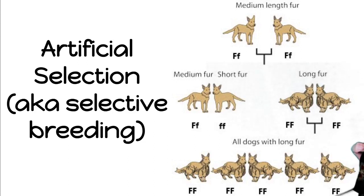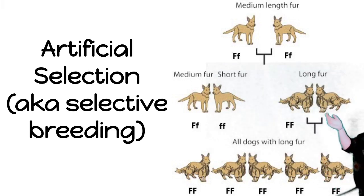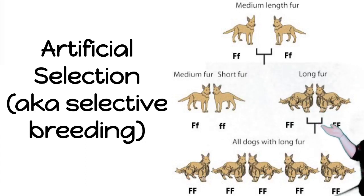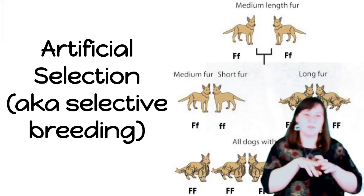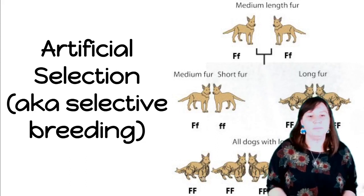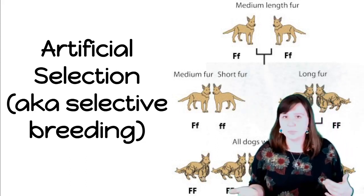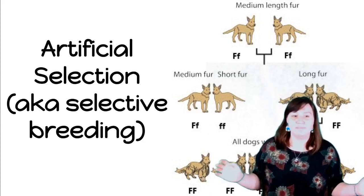Artificial selection is also called selective breeding because you're selecting what trait you're breeding for. Say I want a dog that has really long fur. You take some dogs and let them have puppies, notice that some of those puppies have really long fur, let those puppies grow into adults, then let them breed with other dogs that also have long fur. Once those dogs have puppies, all of their puppies will have long fur. Using artificial selection, dog breeders have come up with over 360 recognized breeds of dogs.